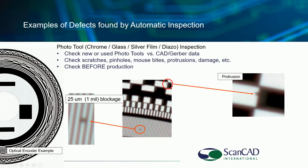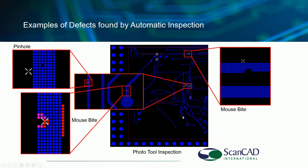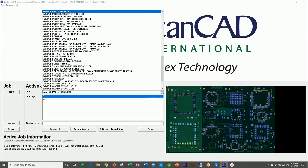Moving forward, we have an optical encoder — another example of how this machine can perform 100% inspection, detecting a 25-micron protrusion or a 25-micron blockage. Also, this could be diazo, mylar, or a silver halide film, where we inspect and detect mouse bites, pinholes, and that type of thing. Let's go look at some film examples of inspection.